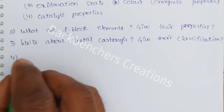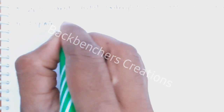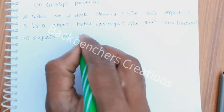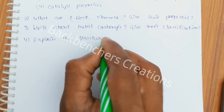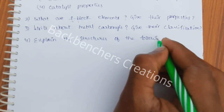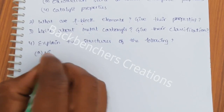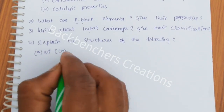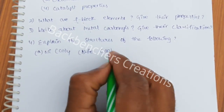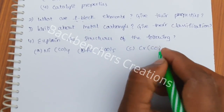Fourth question: Explain the structures of the following — (a) Ni(CO)₄, (b) Fe(CO)₅, and (c) CrO₆.